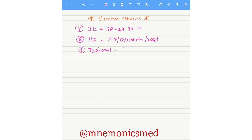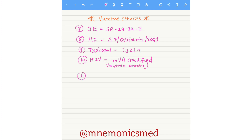For the typhoid oral vaccine, the strain is Ty21a. Now we are learning about the HIV vaccine strain — it is MVA, which stands for Modified Vaccinia Ankara. You have to remember Modified Vaccinia Ankara for HIV.